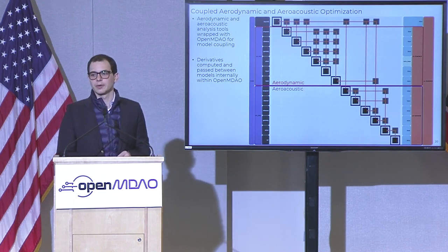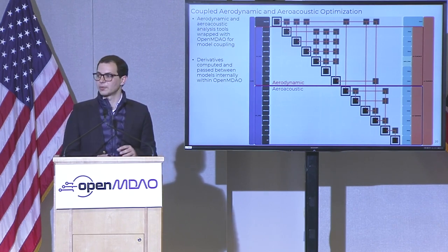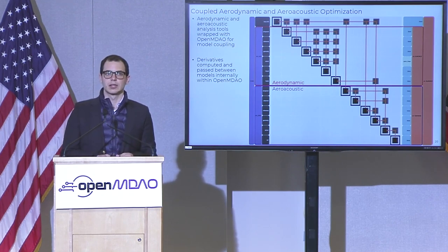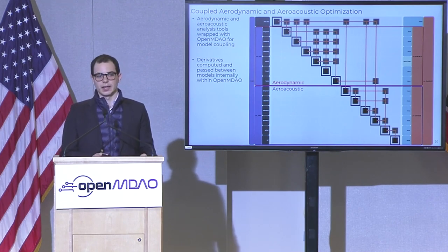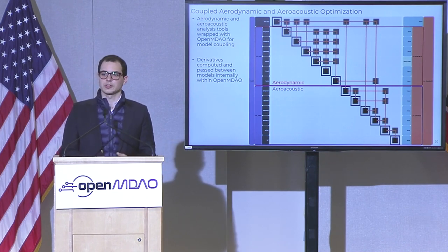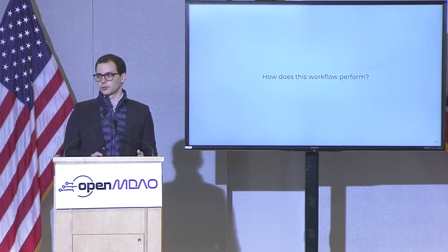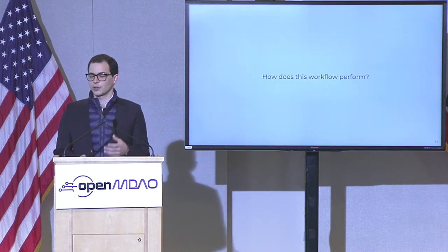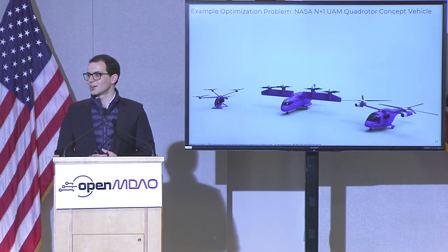How this looks in OpenMDAO: this is the N2 diagram. It's sequential — you have the aerodynamic block on top. I don't use any OpenMDAO-based solvers, so I do the solving myself, which is why you don't see any back-coupling on the lower side of the diagonal. That all gets passed into the aeroacoustic solver, which computes your SPL or sound pressure level and functions of interest.